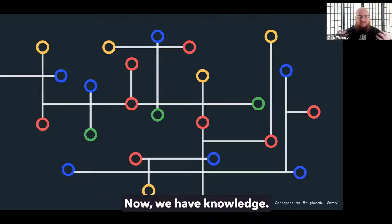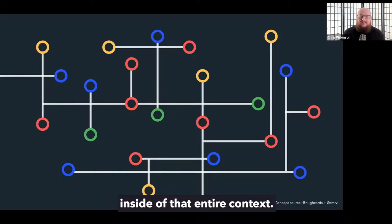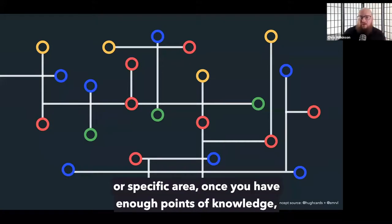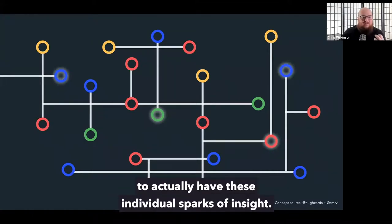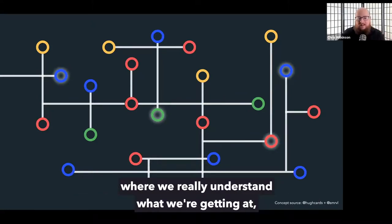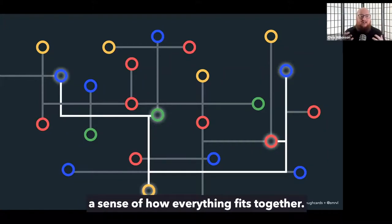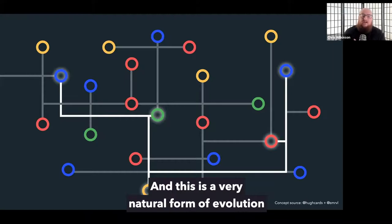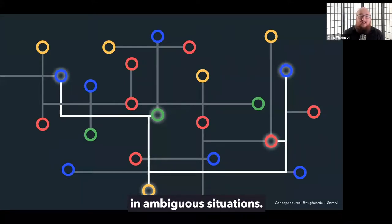We get to the point where we actually have data with information and context behind it. Your pattern-driven brain looks at all of this and says, 'I took in the data. I've decided what it actually means. And now I can begin to draw connections between those points.' Those connections are our attempt to bring some sense of order to an uncertain situation — to bring order to ambiguity. Now we have knowledge, and our brain traverses these paths and understands where we fit inside of that entire context.